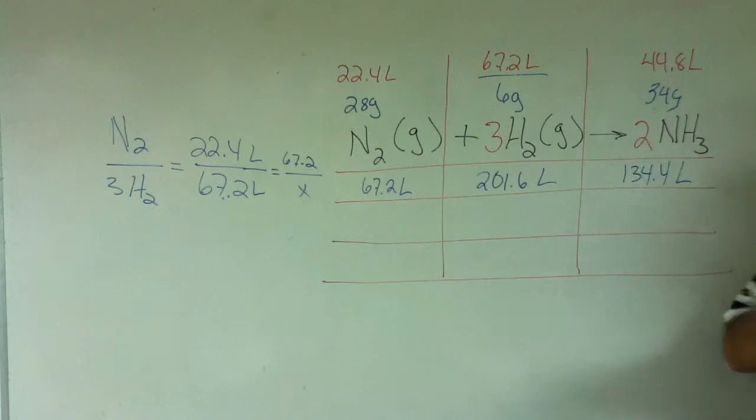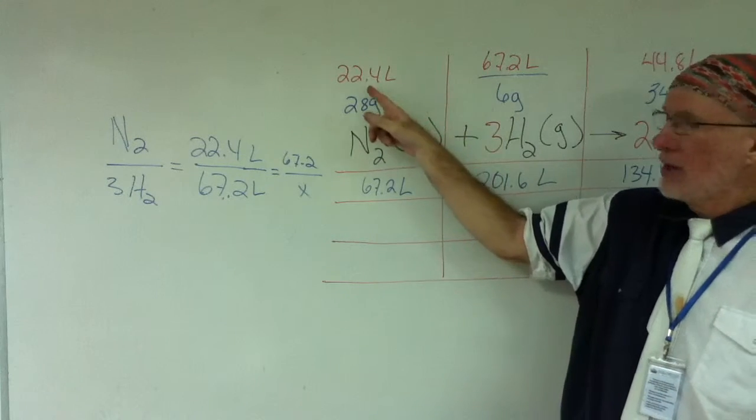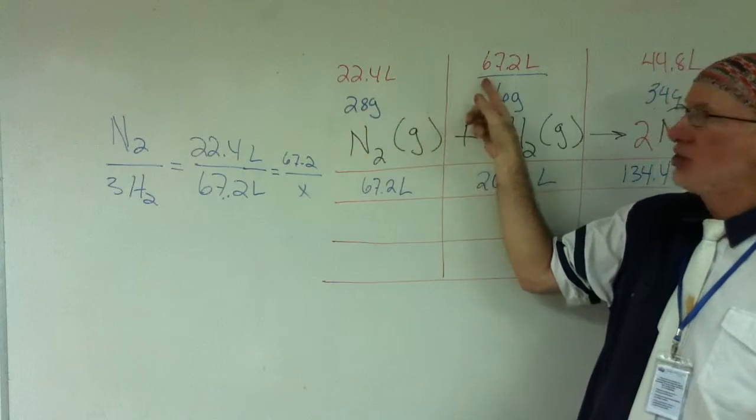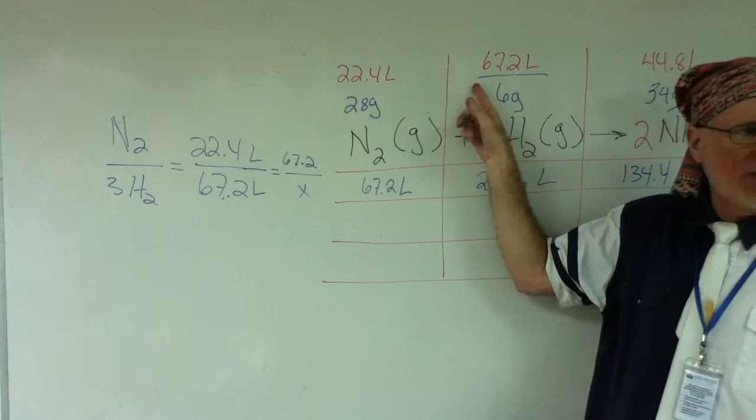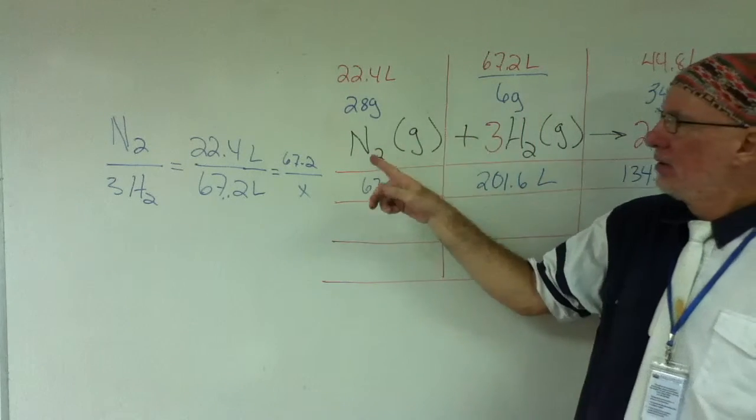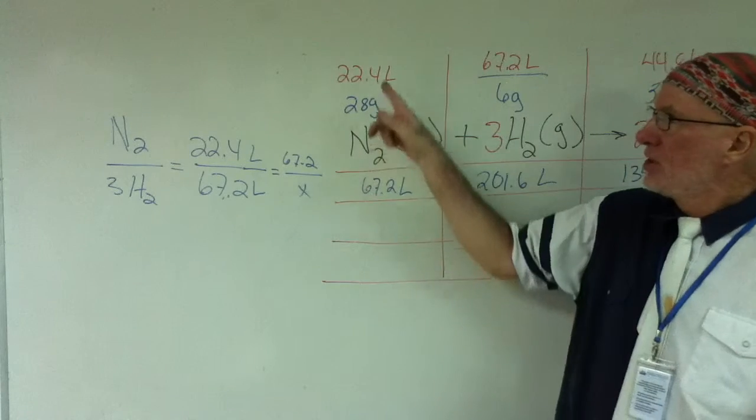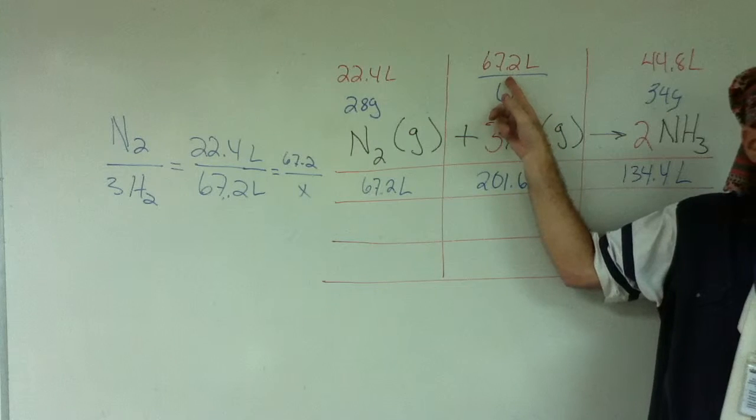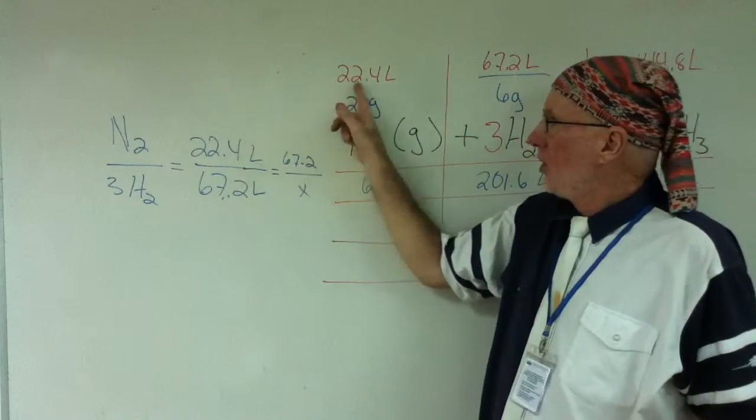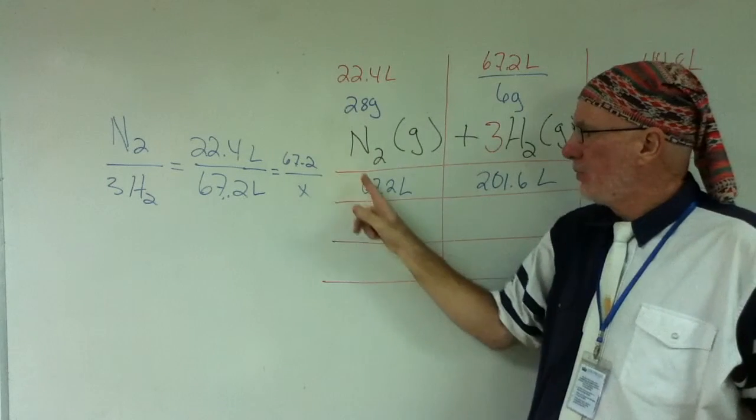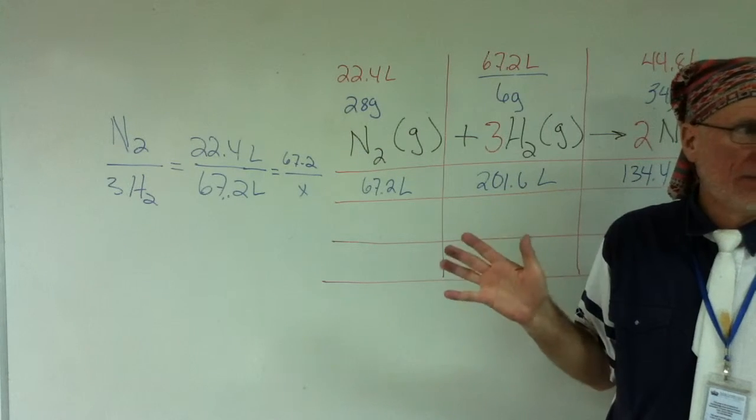1 mole of any gas has a volume of 22.4 liters. Do you understand that? Good. What's the volume of 3 moles of that gas? 3 times 22.4. What's the volume of 2 moles of a gas? 44.8. Correct? Now, if 22.4 moles is compared to 67.2 moles, for every 22.4 liters of this gas I consume, I must consume 67.2 liters of this gas.